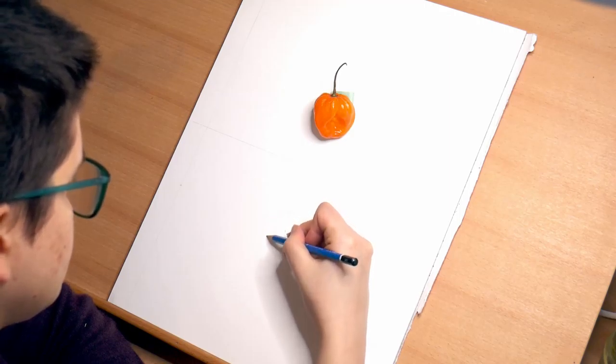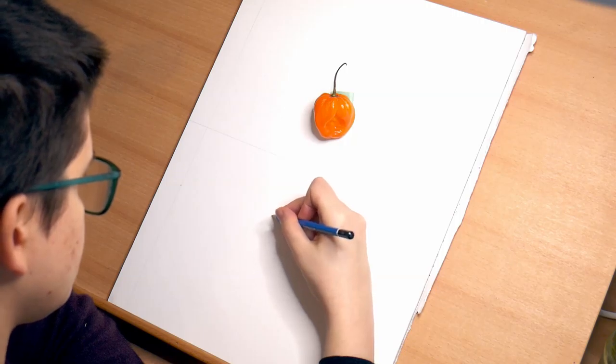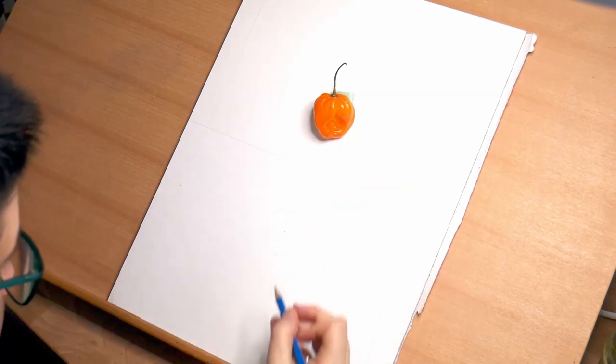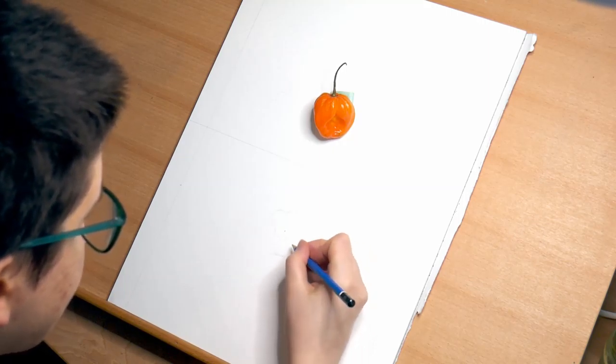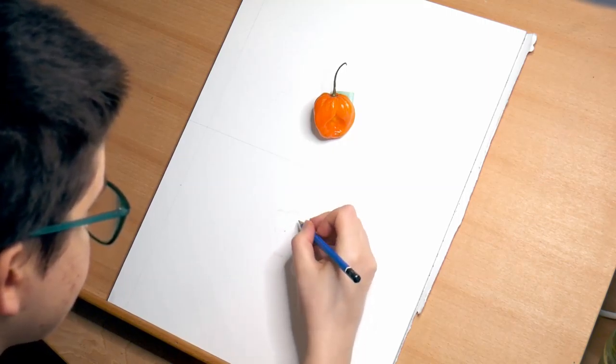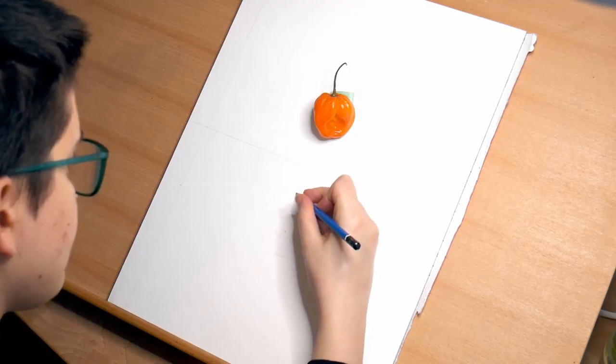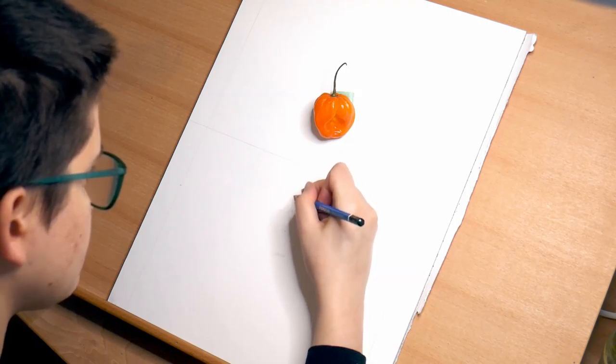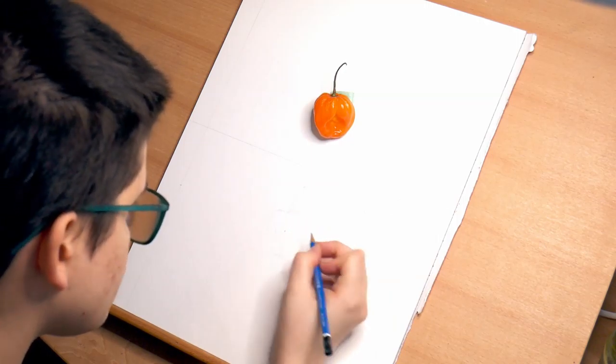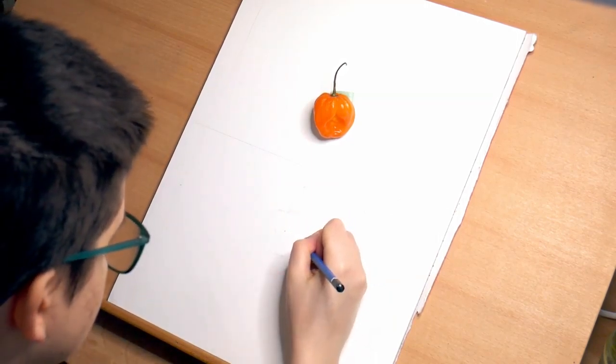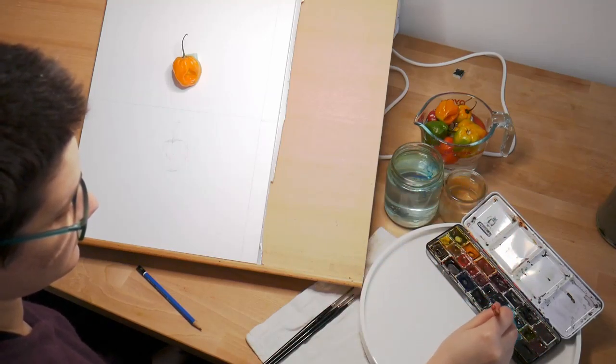I'm also taking some time to really observe where the different areas of colors are. You can't really see it from this angle, but my habanero pepper has an area that's more yellow and an area that's more orange and the shadows are going to be different shades in those areas as well. I'm only drawing lines around where the areas of deepest shadow are and brightest highlights. This will give me an idea of where to fill in.